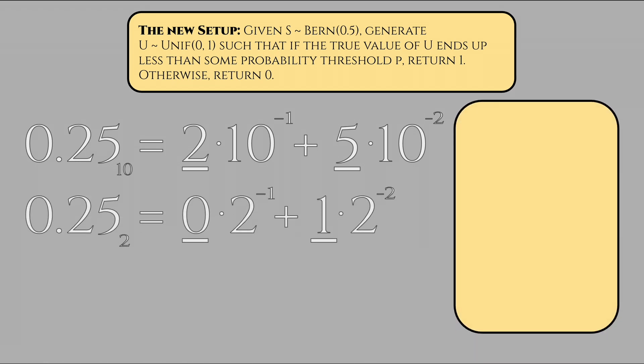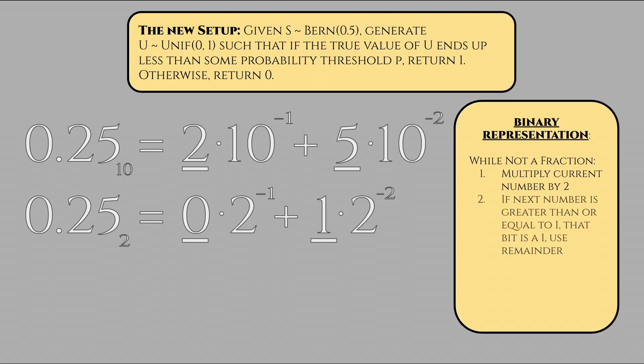For harder values, say 1 over 10, where there's no immediate intuition, we can utilize the following algorithm. While the current number we're looking at is not equal to 0, step 1, we multiply the current number by 2. Step 2, if the result is greater than or equal to 1, then we represent that bit as a 1 and set the next number equal to the remainder of the result divided by 1. Step 3, if this new number is less than 1, then we represent that bit as a 0 and set the next number equal to the result. Step 4, we do this until we reach 0 or a repeated pattern.